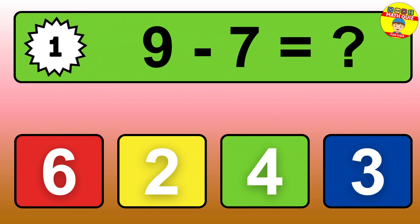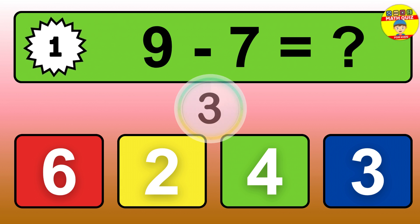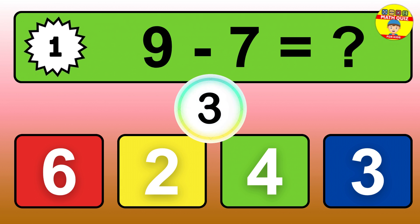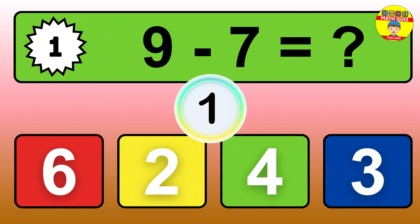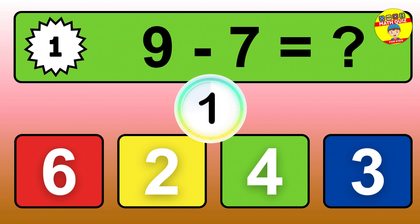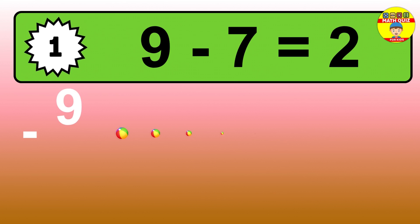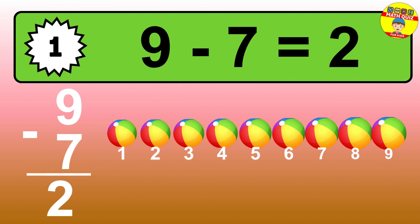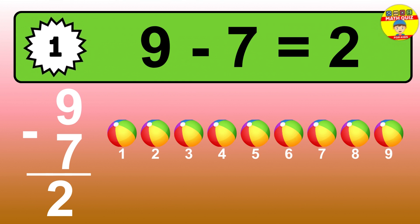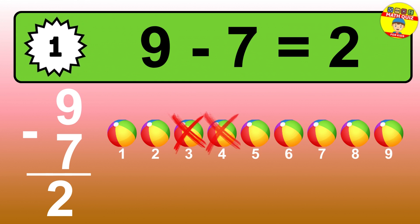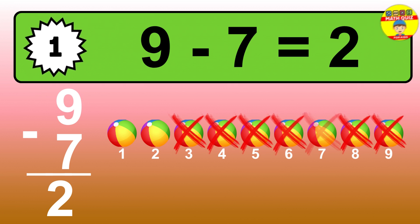Question one: nine minus seven equals what? So the answer is, nine minus seven is two. Let's count it. One, two.